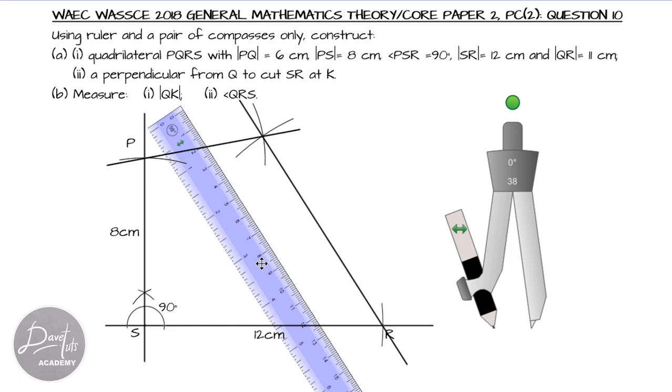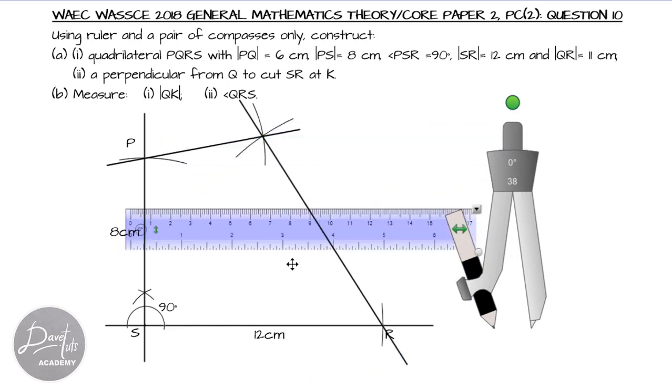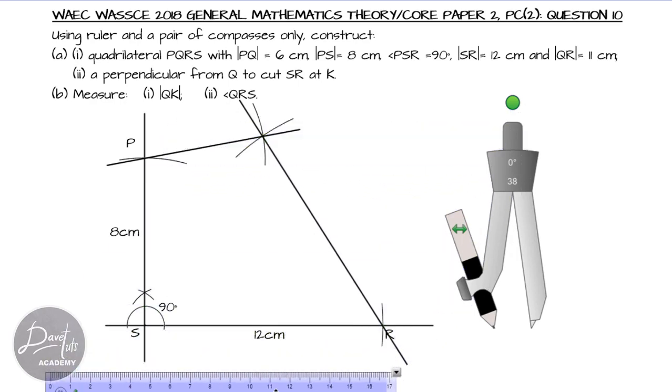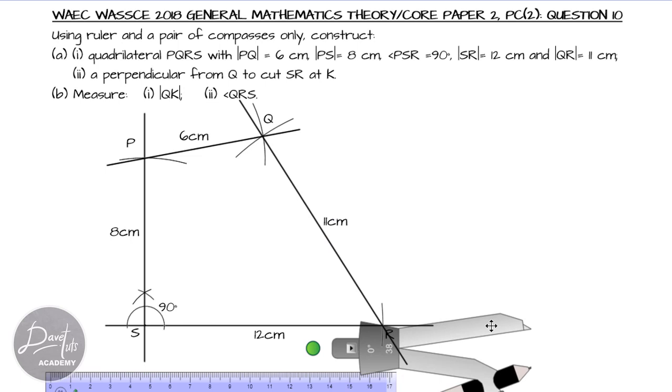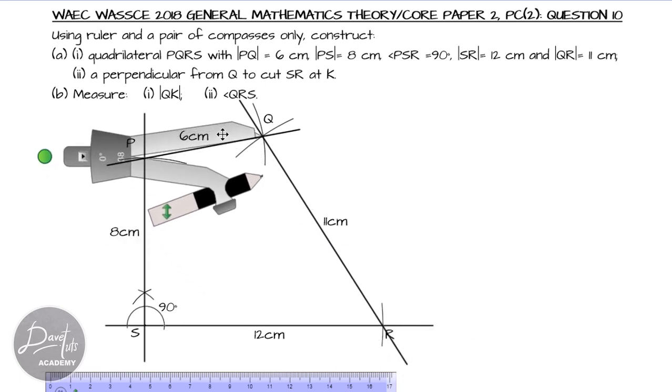So, we can go ahead to label our diagrams and complete our quadrilateral. So, we have to note our point Q. Okay, this is point Q now. So, we have gotten QR as 11 cm and PQ as 6 cm. So with that, we have been able to finish question A1, but then we are asked to find a perpendicular from Q to cut SR at K.